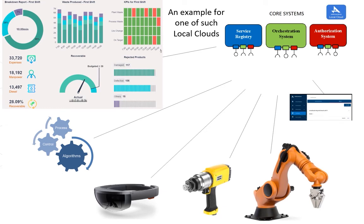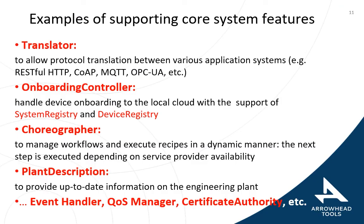This is an example of one such local cloud where various management systems, core systems, dashboards, algorithms, sensors, and actuators can be found — orchestrated together or working toward a common goal through workflow choreography. The supporting core system features include the translator for protocol translation, the onboarding controller that handles new devices joining the local cloud with the support of the system registry and device registry, and the choreographer that manages workflows and executes recipes dynamically.